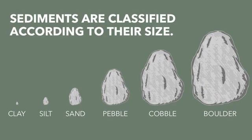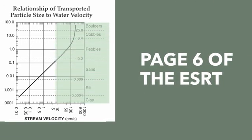Sediments are classified according to their size. We have six categories of sediment sizes: the smallest being clay, then silt, then sand, then pebbles, cobbles, and boulders being the largest. Sand just refers to a size of particle, not a specific material. The specific sizes can be found on page six of your earth science reference tables. Pay attention to the names of the sediment sizes on the right-hand side highlighted in green — they tell you how big each sediment is.